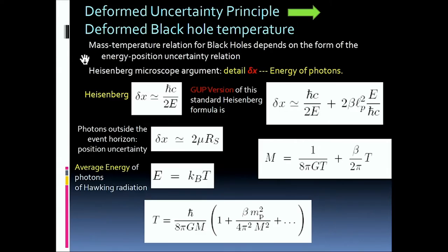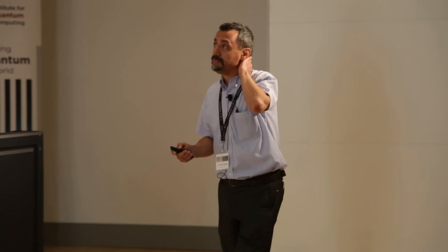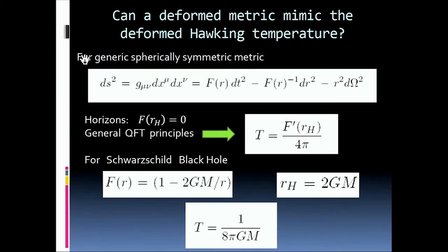You can invert this relation, writing down the temperature, which results to be, in this case, the Hawking term here, the dominant term, and then some deformation in beta. The idea is that this temperature can be computed using the GUP, the generalized uncertainty principle. And we would like to know if it is possible to mimic, to deform a metric, so that we can mimic this deformed Hawking temperature.